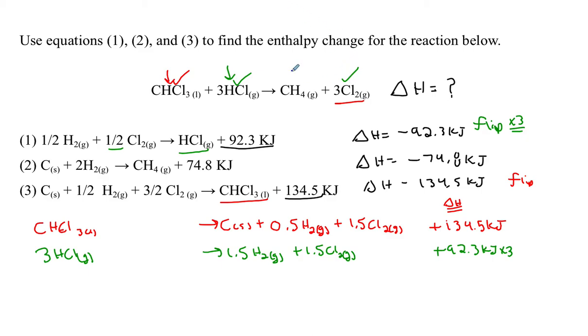So now I just need to get the methane on the product side. So equation number two gives me methane on the product side, the right count. So I'm going to use equation number two exactly as written. So pure carbon plus two units of hydrogen gas will produce the one unit of methane that I want. And that enthalpy change is minus 74.8 kilojoules.